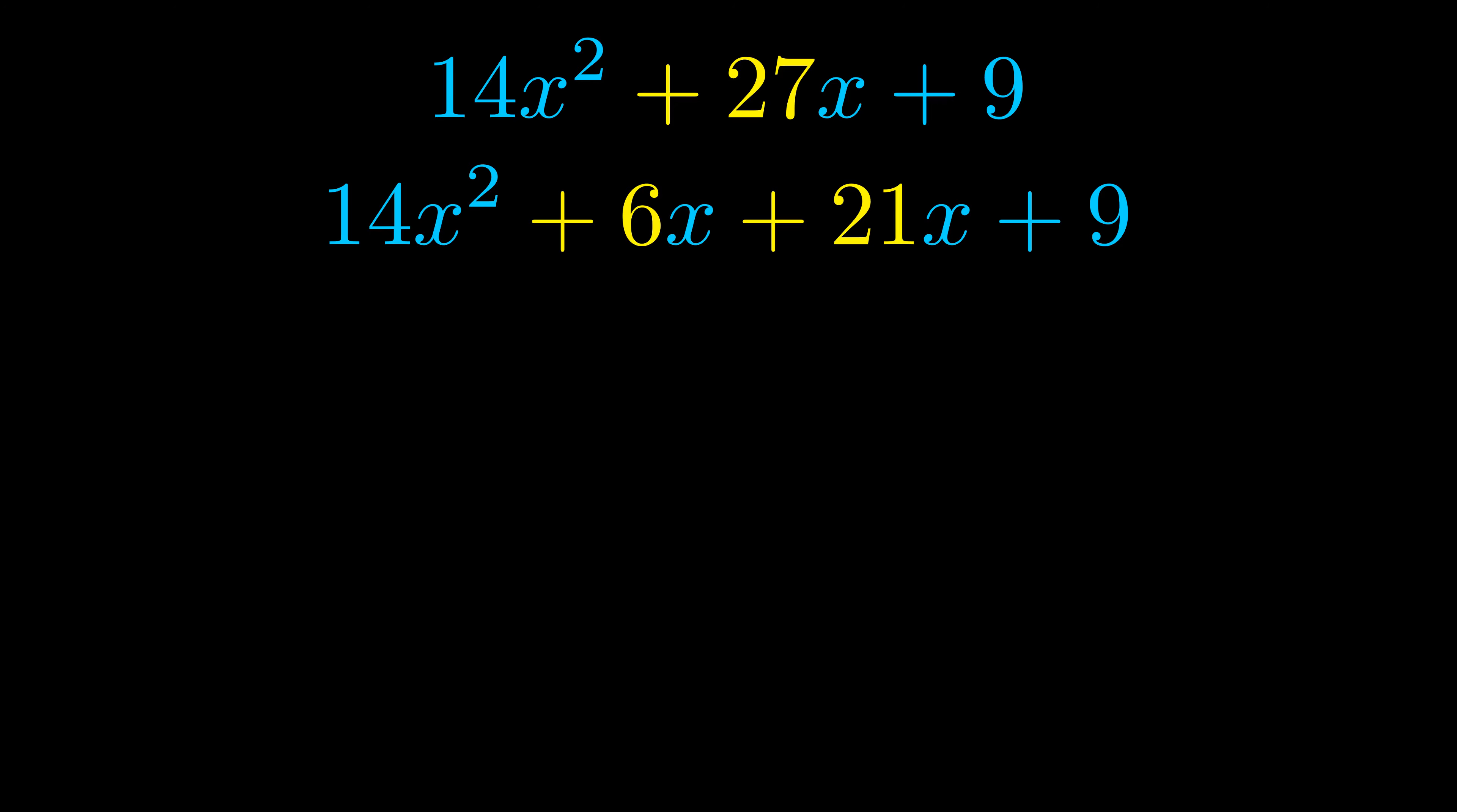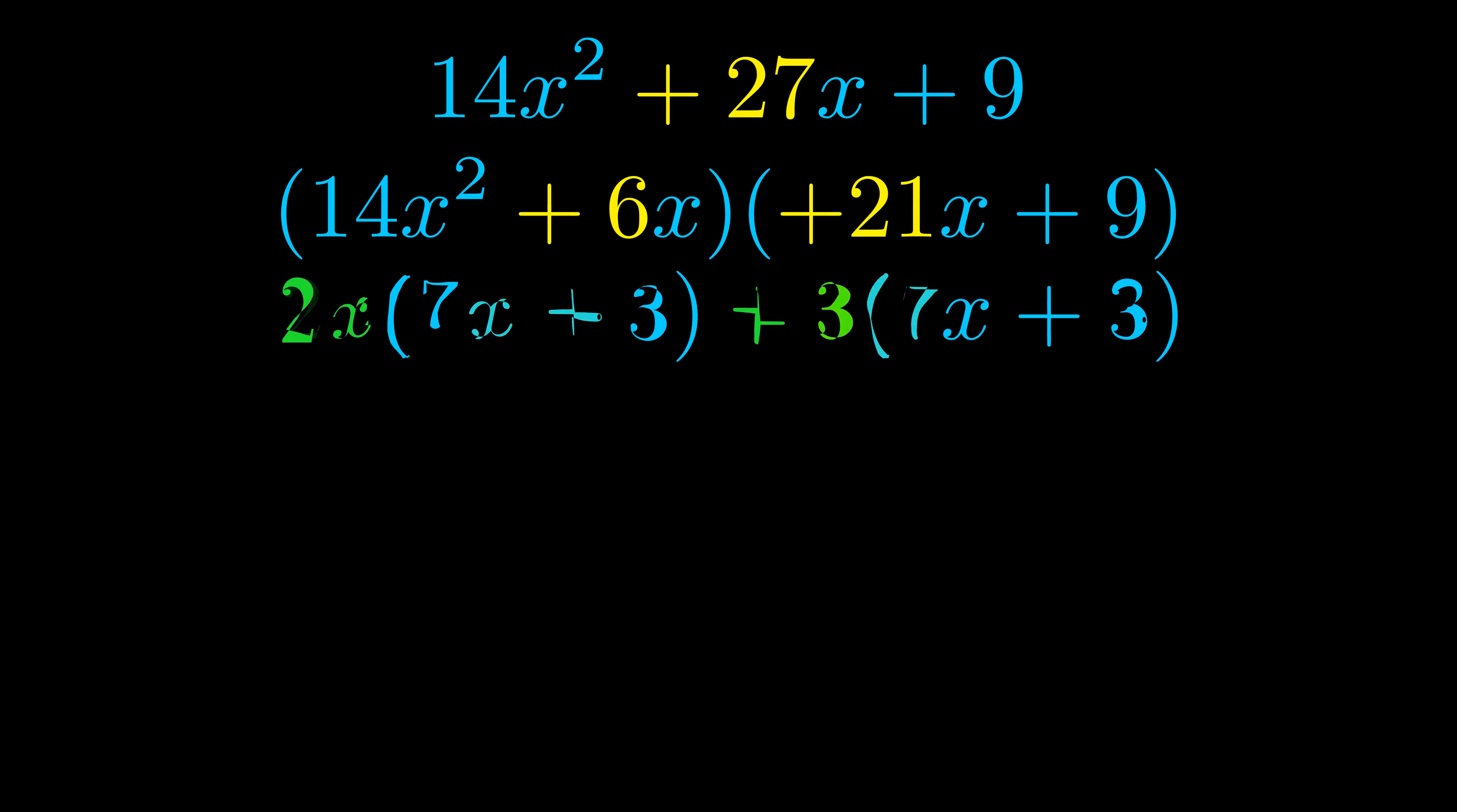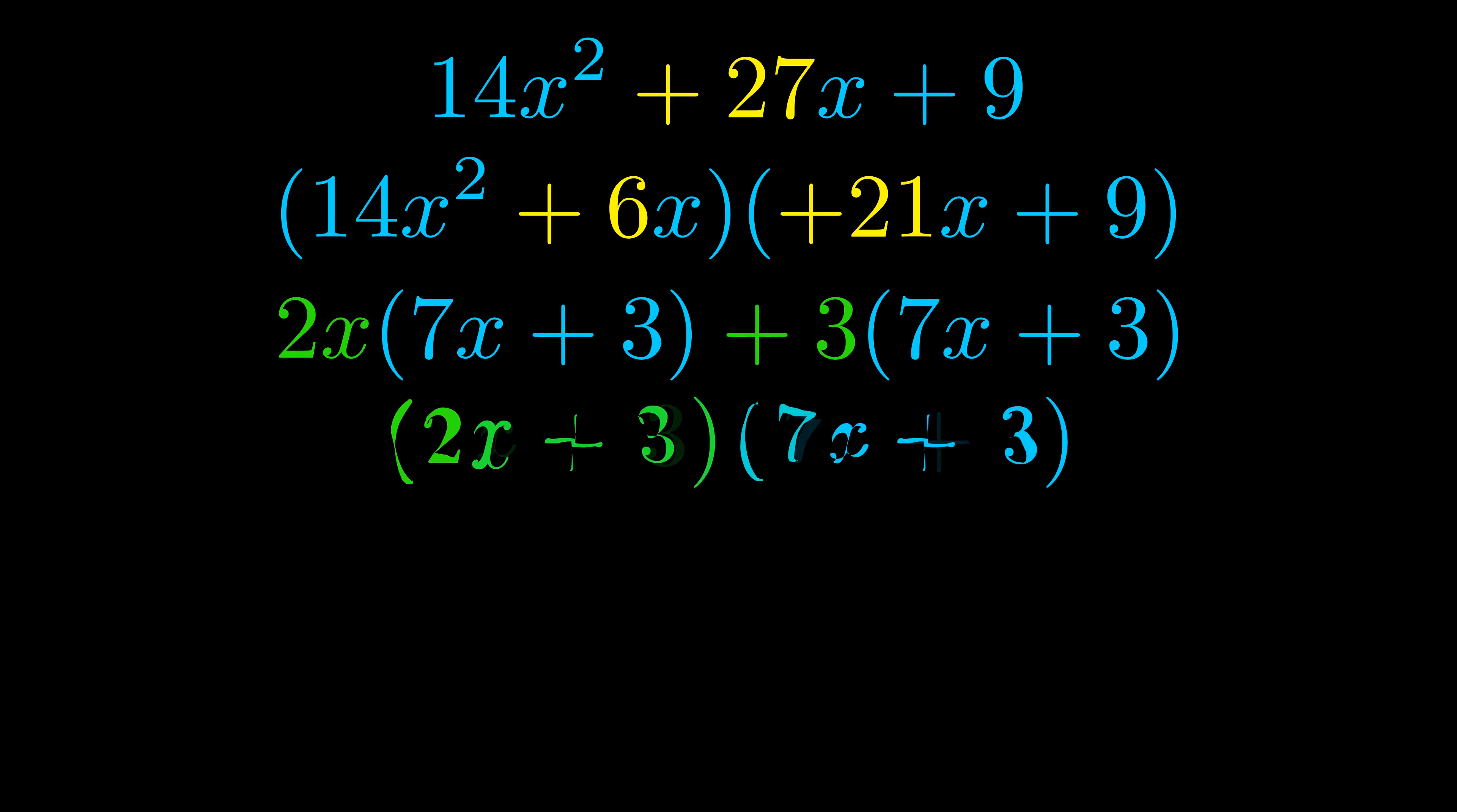Once we've done this we go ahead and put parentheses around the first term and the last term, and we do that so that we can take the greatest common factor out of both terms. We can see the greatest common factor is now outside in green. Notice also how what remains inside of the parentheses is the same in both cases. The blue values are the same.